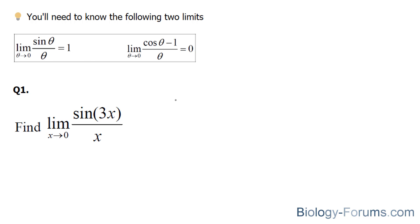One way that you can match these coefficients is by multiplying the top and the bottom by the coefficient that you want. So by multiplying this top part by 3 and this bottom part by 3, you end up with 3 sine 3x over 3x.